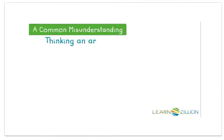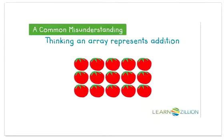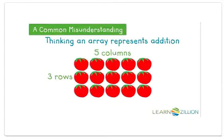Some students think an array represents addition. This array has three groups of tomatoes with five tomatoes in each group — three rows and five columns. But three plus five equals eight, and an array does not mean to add the rows and columns.